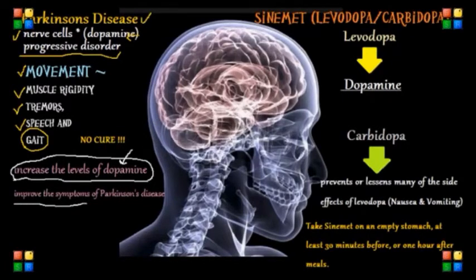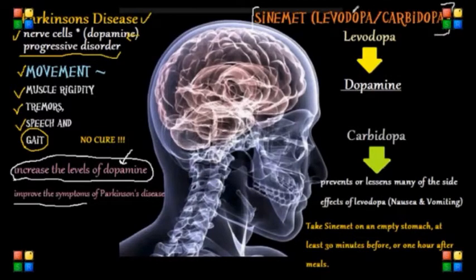One of the most common drugs used to treat Parkinson's is Sinemet, which is made up of two drugs: levodopa and carbidopa. That is why Sinemet is sometimes called levodopa-carbidopa.